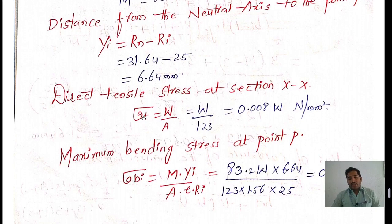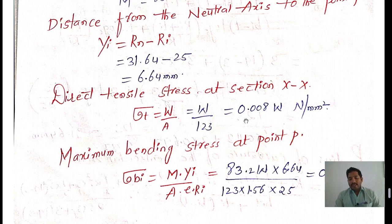Our intention is to find the direct tensile stress at section X–X. Since the load is unknown, the direct stress = W/A = W/123 = 0.008W N/mm².